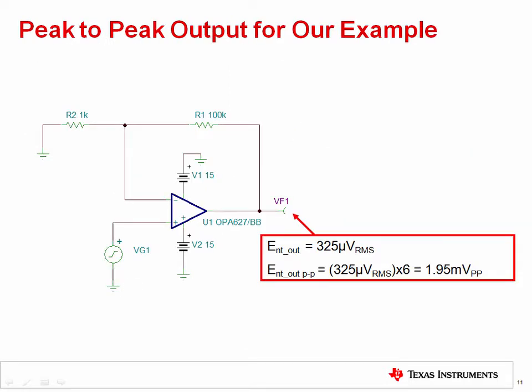Multiplying the RMS output by 6 gives us the estimate of peak-to-peak output noise voltage. In this example, the peak-to-peak output voltage noise is 1.95 millivolts peak-to-peak. In later videos, we will simulate and measure the circuit with the same results.